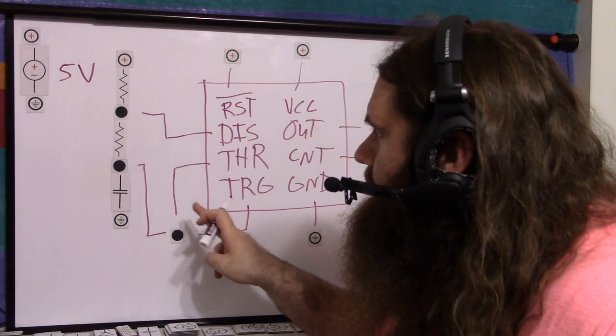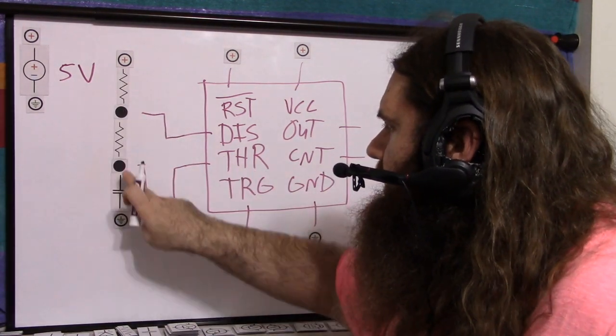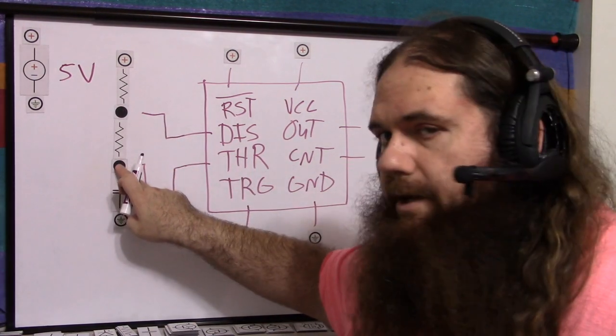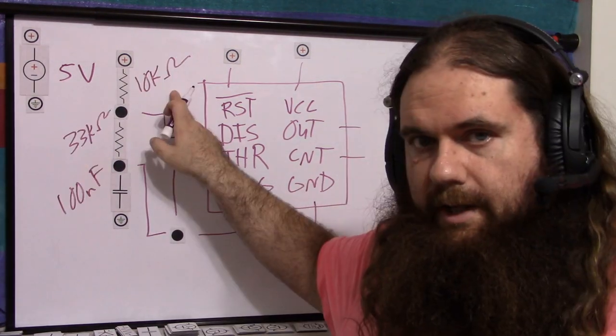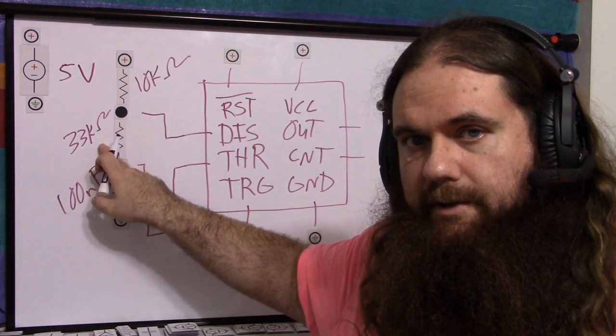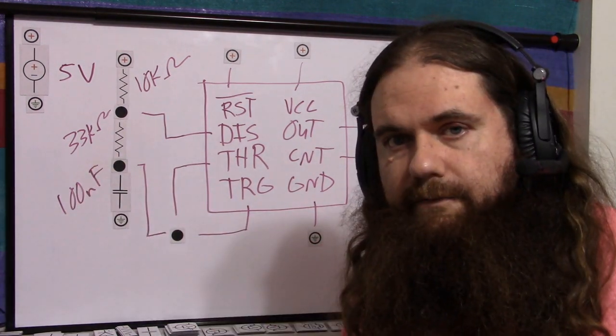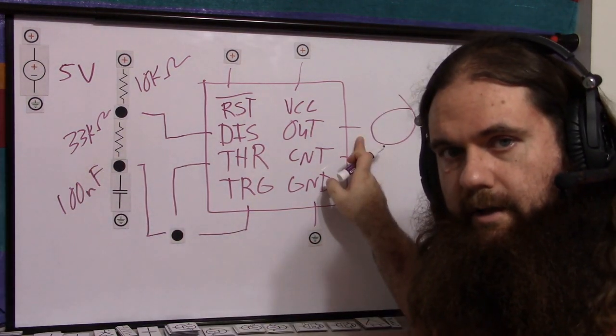Same simple square wave configuration: two resistors and a capacitor, threshold and trigger tied together above the capacitor, discharge between the resistors. 10k ohm top resistor, 33k ohm bottom resistor, 100 nanofarad capacitor, and we get our square wave.